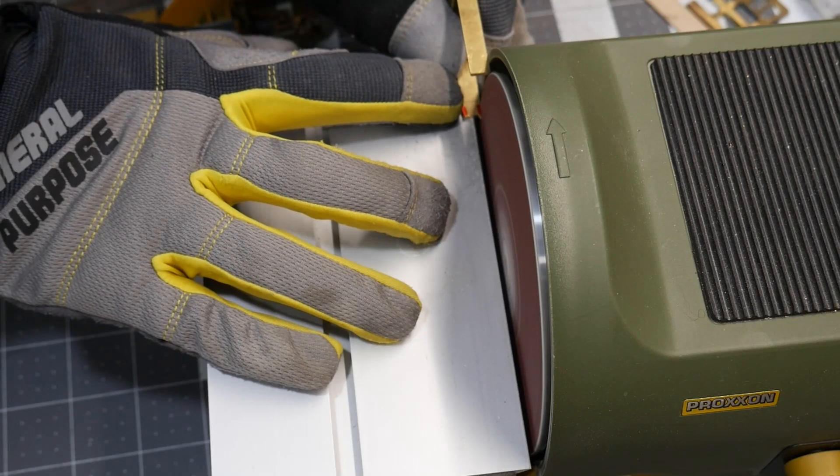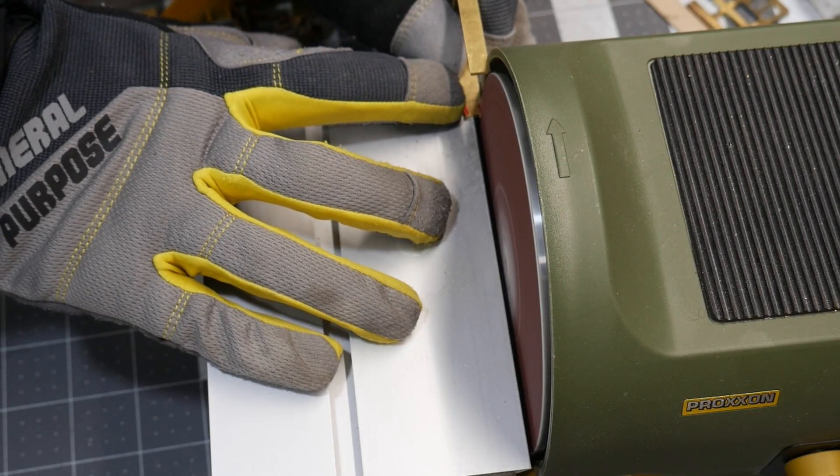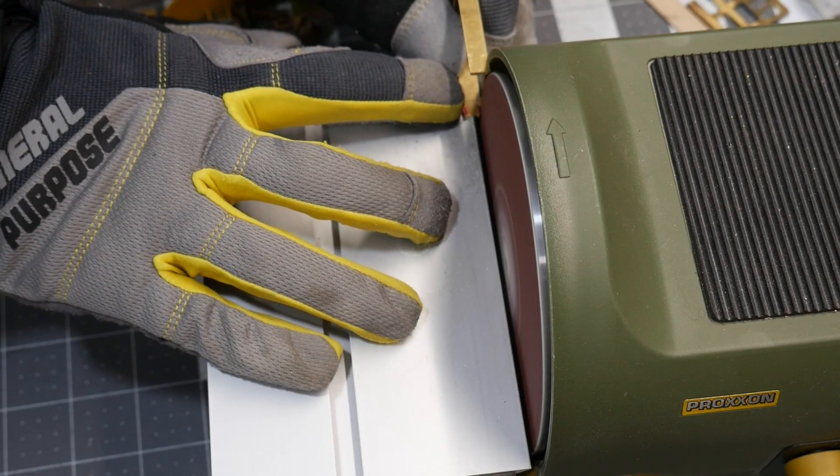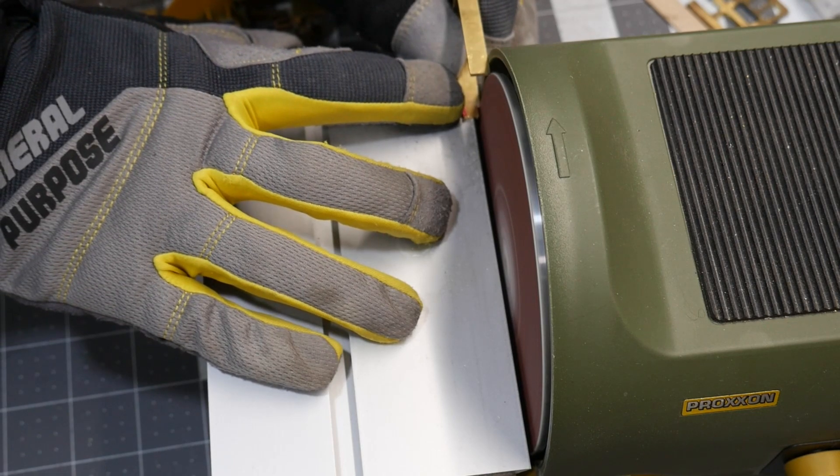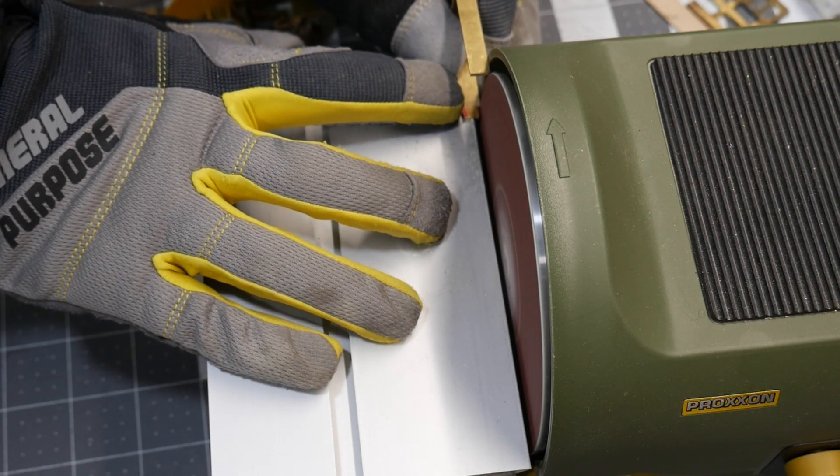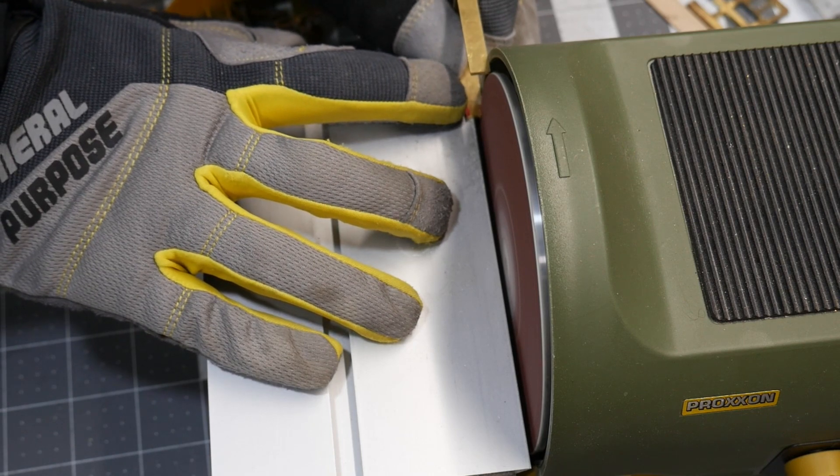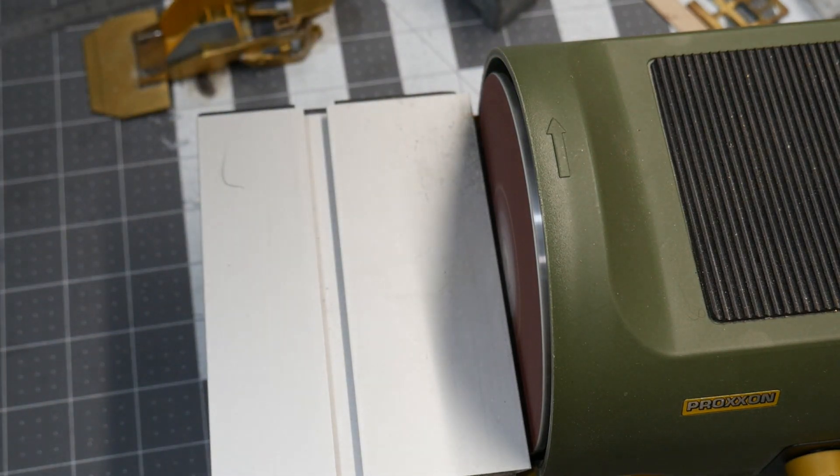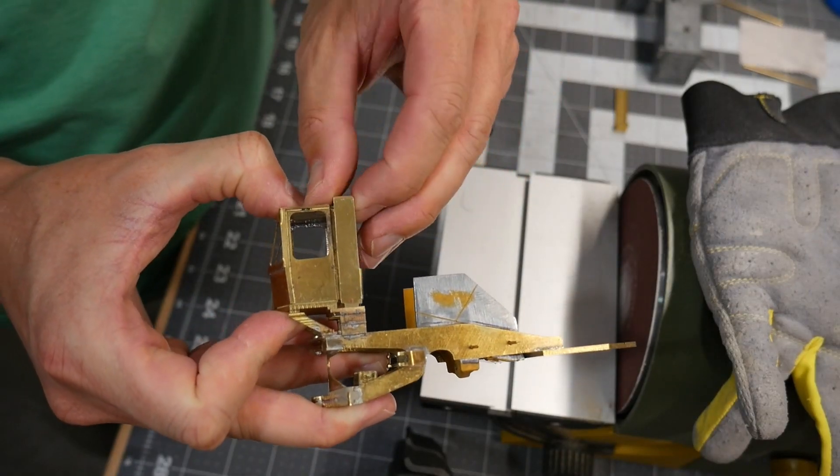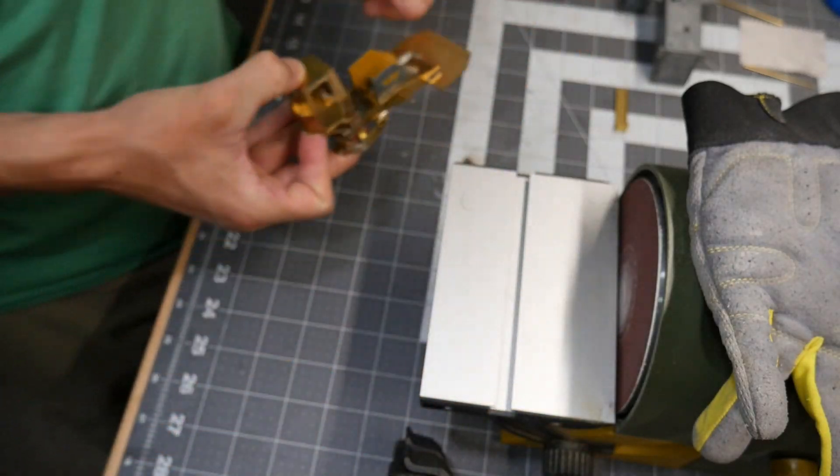Before being able to install the rollover protection into the mounts that I made for it, I needed to take and narrow the bottom of it out just a little bit so that it would fit into the spot where it's supposed to be received. It took a little bit of adjusting but I eventually got it to fit.